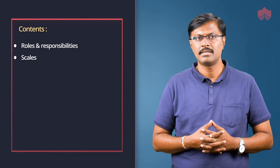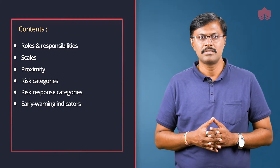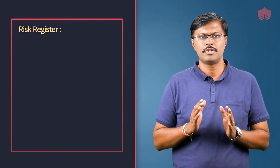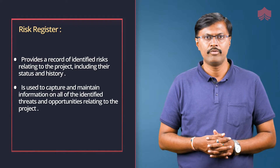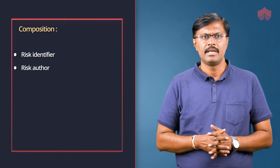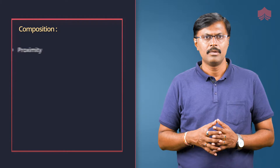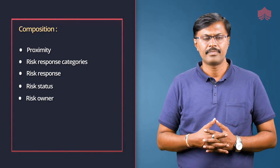Further components of the risk management approach include: scales for probability and impact, proximity, risk categories, risk response categories, early warning indicators, risk tolerance, and risk budget — including whether a risk budget will be established and if so how it will be used. The purpose of the risk register is to provide a record of identified risks relating to the project including their status. It is used to capture and maintain information on all identified threats and opportunities. The risk register comprises: risk identifier, risk author, date registered, risk category, risk description, probability, impact and expected value, proximity, risk response categories, risk response, risk status, risk owner, and risk actioner.